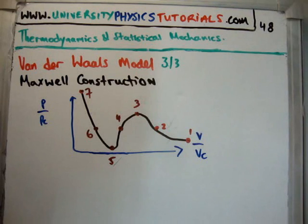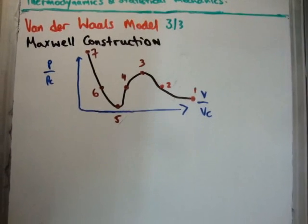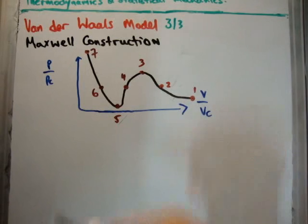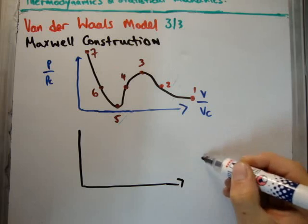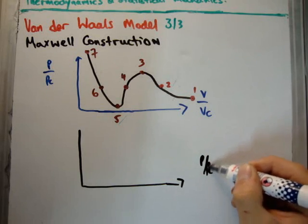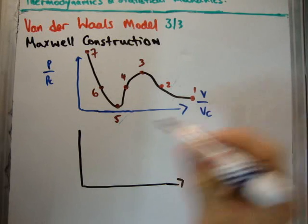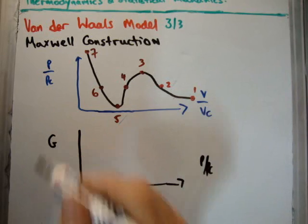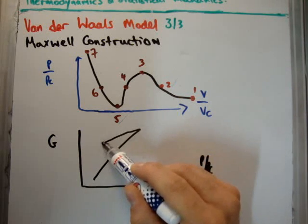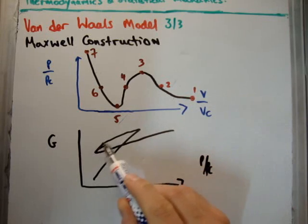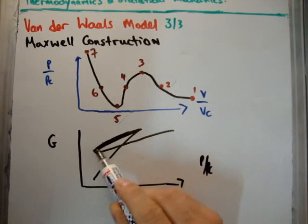Now, if we, at the same time, plot the Gibbs free energy, you're going to have to believe me that this is what it looks like. If I plot the P over P critical, notice by the way I've gone from volume to pressure, but here we have the Gibbs free energy. It should look something like this. That's supposed to be a straight line, believe it or not.